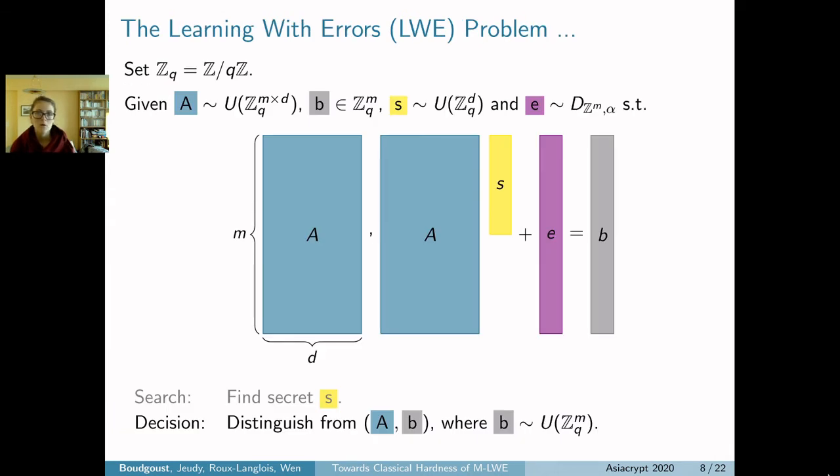The learning with errors problem may be familiar to you, but I will recap the definition. We set the quotient ring Z_q as Z modulo qZ. The LWE problem is given by some matrix A sampled uniformly at random and a vector b of dimension m given by A·s + e, where s is a secret vector of dimension d and e a vector of dimension m but of small norm (think of a Gaussian). The search variant asks you to find the secret s, and the decision version asks you to distinguish whether b comes from this learning with error sample or if b is sampled from the uniform distribution.